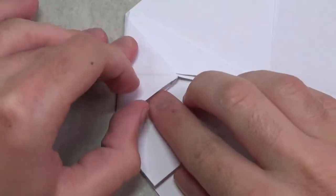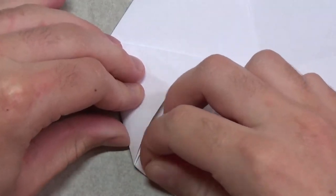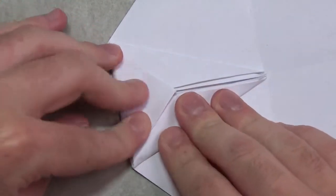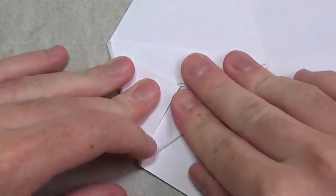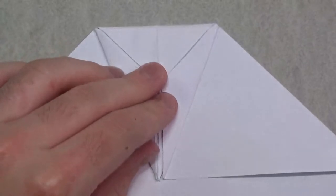Repeat on this side. Open up the pocket like this and then kind of curl this a little bit. Then tuck it in. Like this. That's what it looks like.